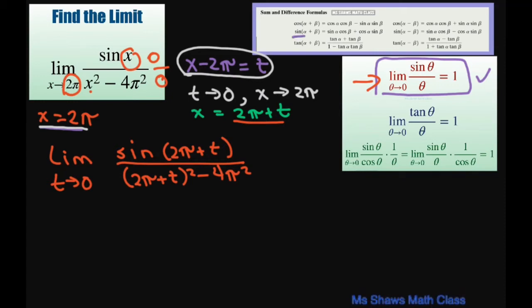Now for the numerator, we're going to have to use our sum formula for trig. So that's going to be sin(2π)cos(t) plus cos(2π)sin(t).